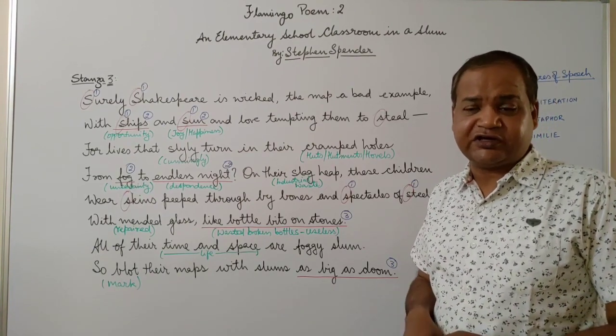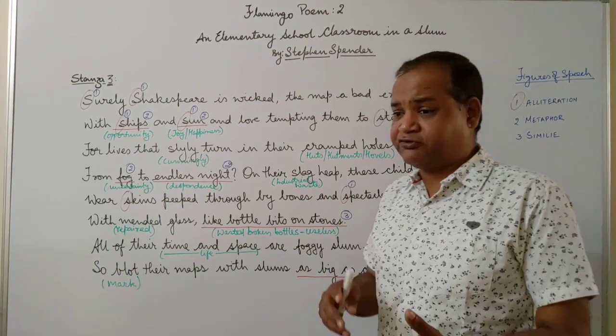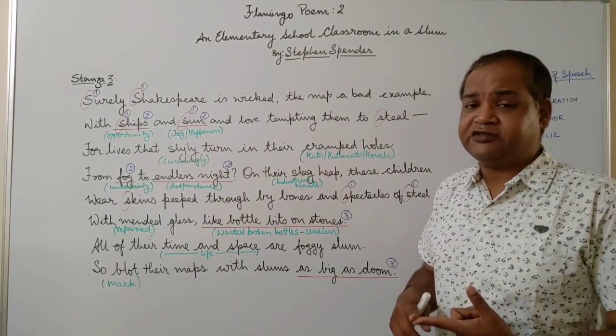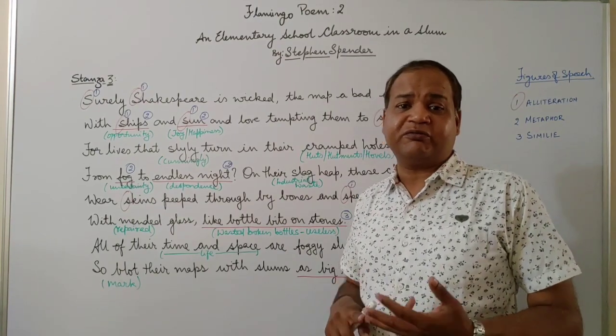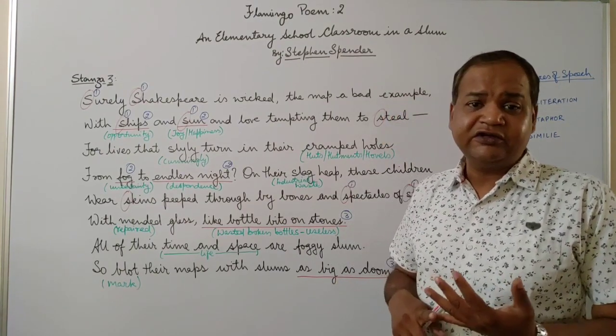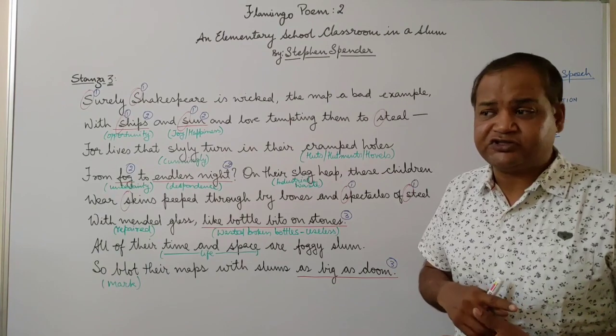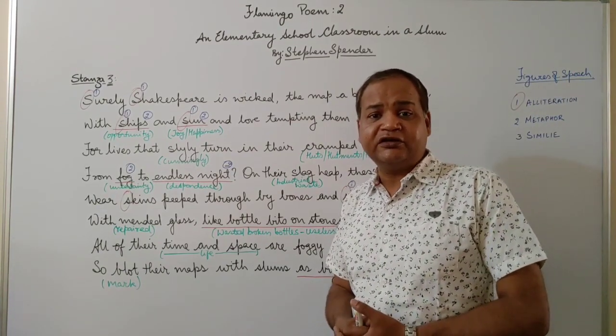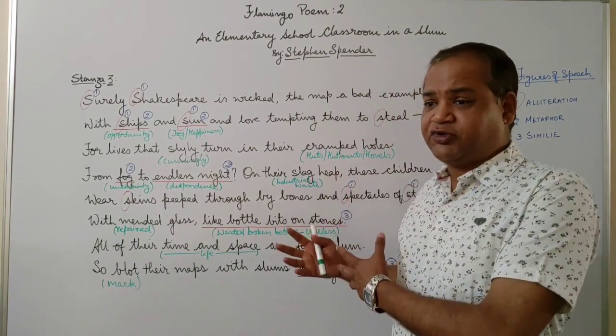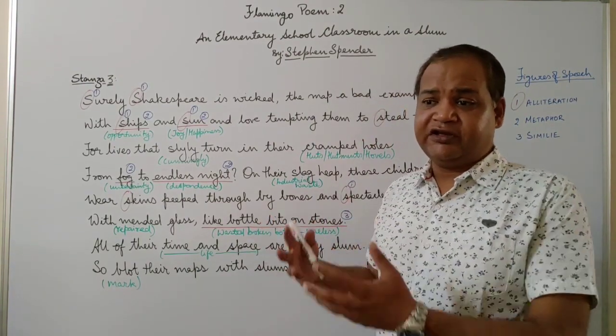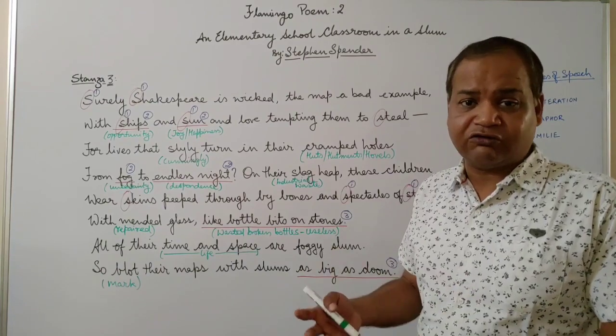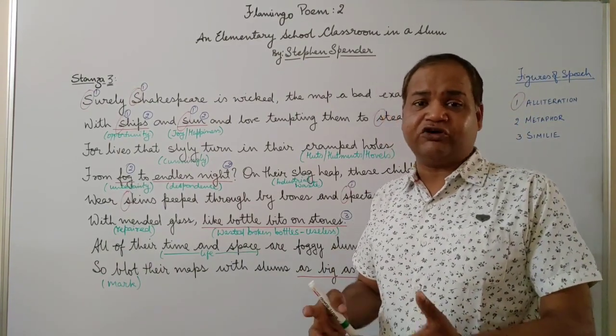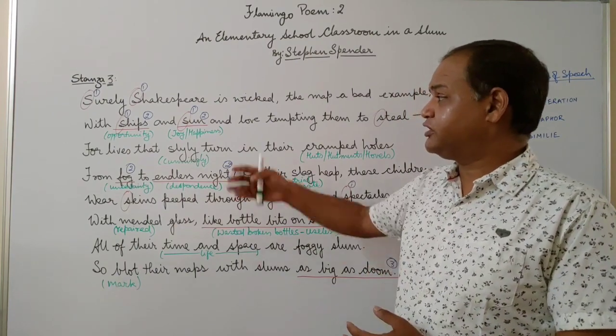But what he wrote was about the rich, the famous, the powerful. He wrote about kings and queens, he wrote about romance, he talked about love, he talked about beauty of nature. But never has he ever spoken about the poor and the downtrodden. So giving the example of Shakespeare in a classroom where they don't understand all these things such as love and romance and opportunity and opulence, so these children cannot relate to Shakespeare and therefore Shakespeare is being called wicked.